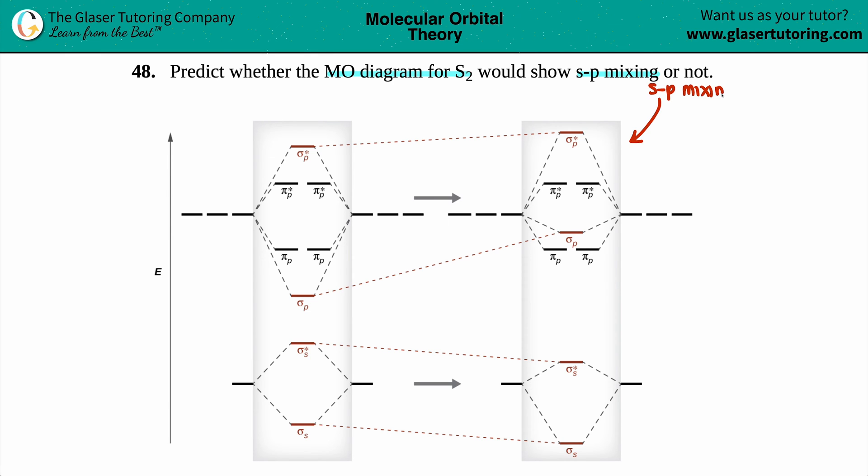The first one does not show sp mixing. Now the question is, which elements show sp mixing and which ones don't? This goes by your groups. So just know that for sp mixing, you are in groups 1 through 5. So generally it's 1, 2, and then 3A, 4A, 5A.